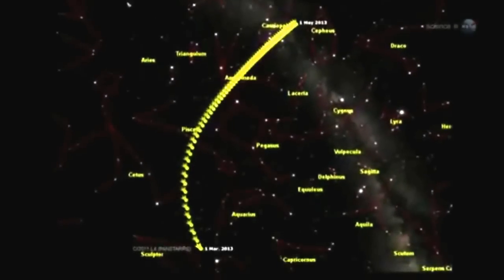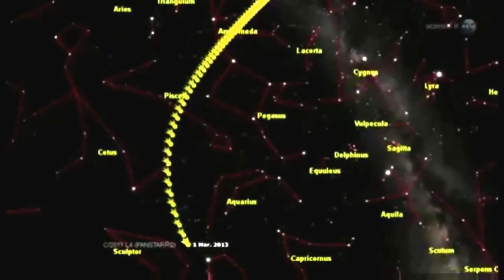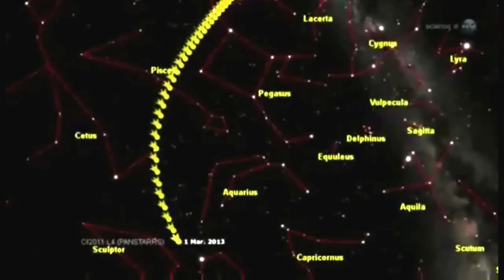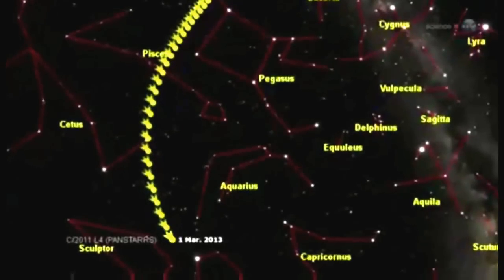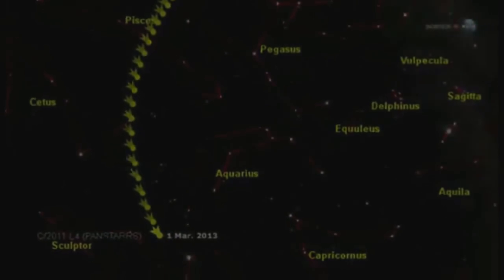In early March, the comet will pass about 100 million miles from Earth as it briefly dips inside the orbit of Mercury. Most experts expect it to become a naked-eye object about as bright as the stars of the Big Dipper.